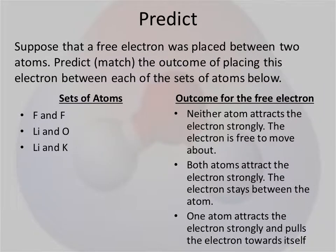So let's have a little hypothetical situation. Suppose that we have a free electron and we place it between two atoms. We want to predict what the outcome of placing this electron between these two sets of atoms will be. So we have three possibilities and then three possible outcomes.